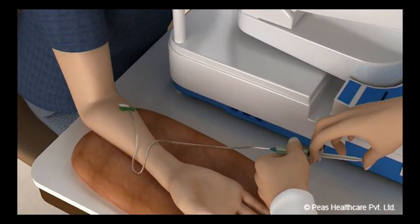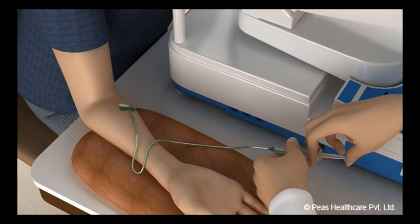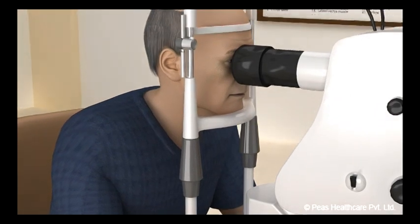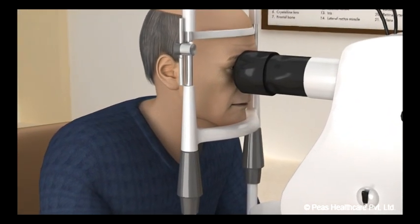At times, your doctor may inject a dye into a vein in your arm. Then, by looking into your eyes with a magnifier and taking pictures with a special camera, the ophthalmologist can visualize any abnormalities in your macula.